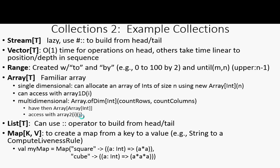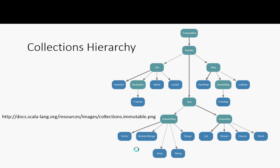A map creates a dictionary — it maps from keys to values. You can define a map that maps names of functions to the functions themselves, taking in a String and returning a function. You'll notice the actual inline syntax for specifying map elements: 'key -> value' for each entry. This is a very neat form for specifying what the key is and what the corresponding value is. So maps are a very powerful part of the collections hierarchy.